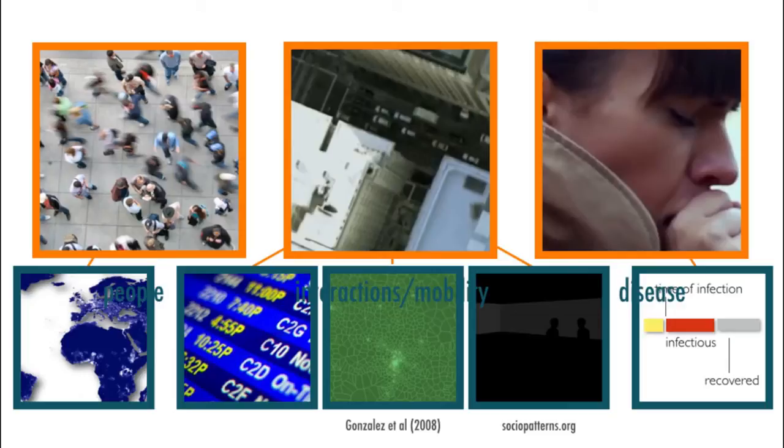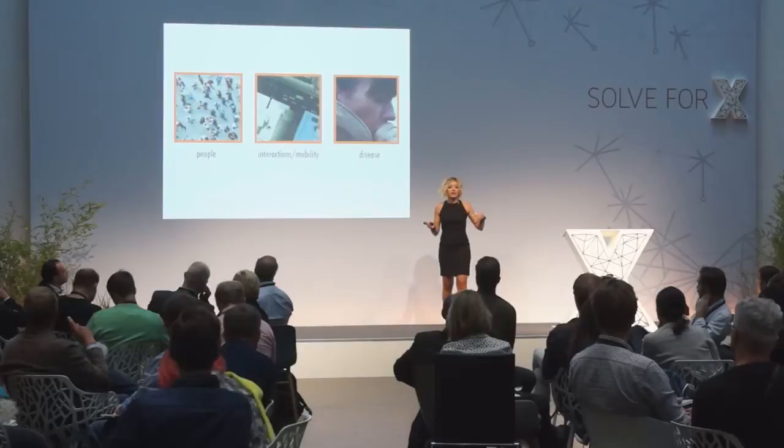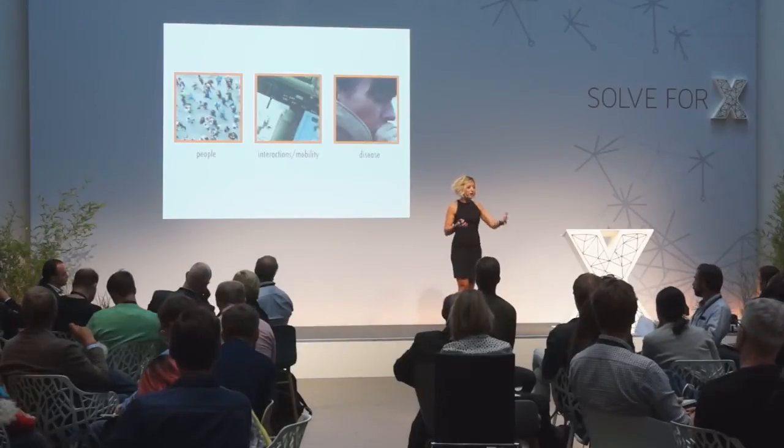So what can we do? The approach we proposed is to look at the basic elements which play an important role in the diffusion of an epidemic. We have, on one side, individuals; then how they interact — each interaction could lead to a spread of the disease; how they move in space, which is relevant for spatial diffusion; and we need to describe how the disease progresses in humans and the chances of being contracted by individuals.